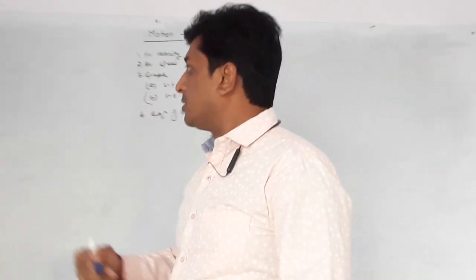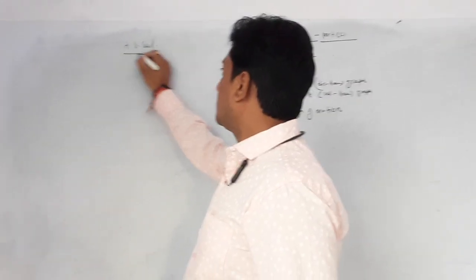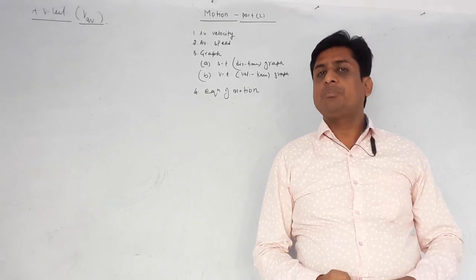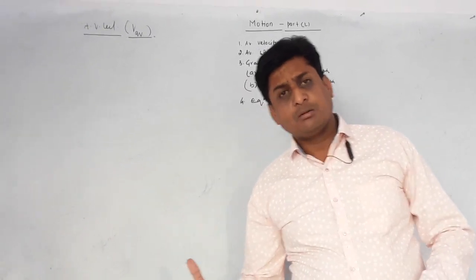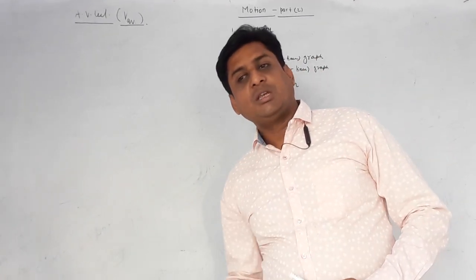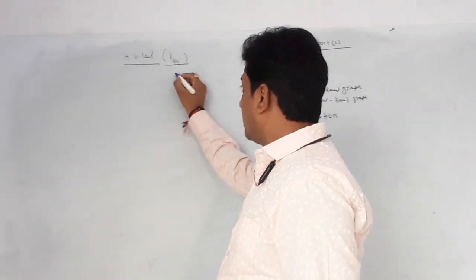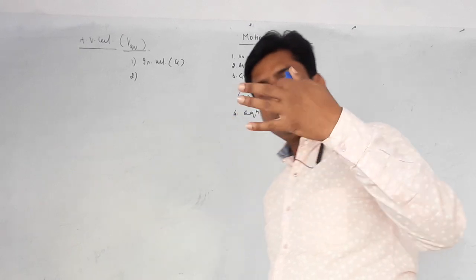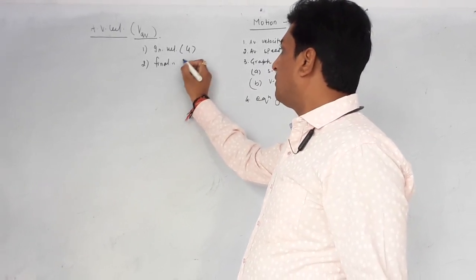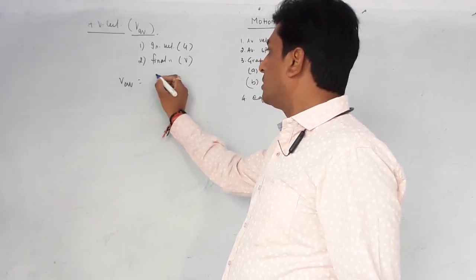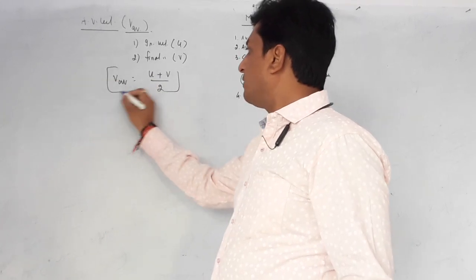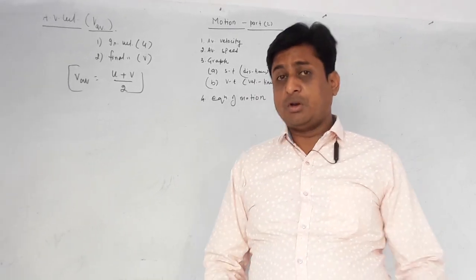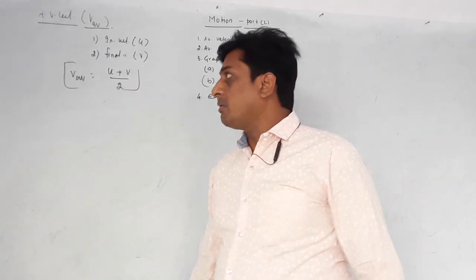The first topic is average velocity. As I told in a previous lecture, whenever any motion is continuing, there is a velocity by which motion starts — called initial velocity, symbol U — and a velocity at which motion ends — called final velocity, symbol V. The concept of average velocity is the average of these two: initial velocity plus final velocity divided by 2. This formula is used whenever velocity changes, meaning non-uniform motion.